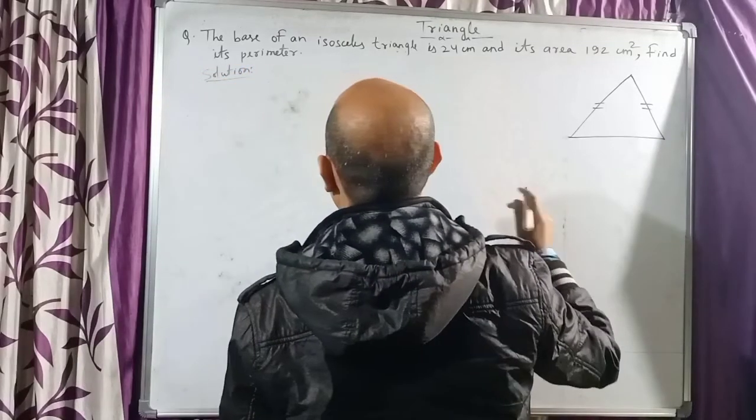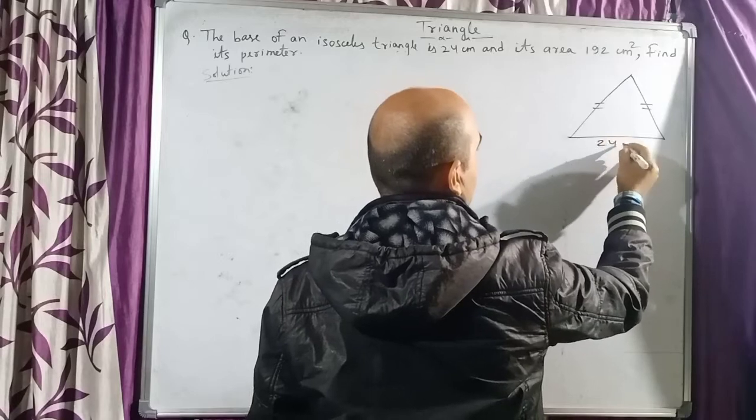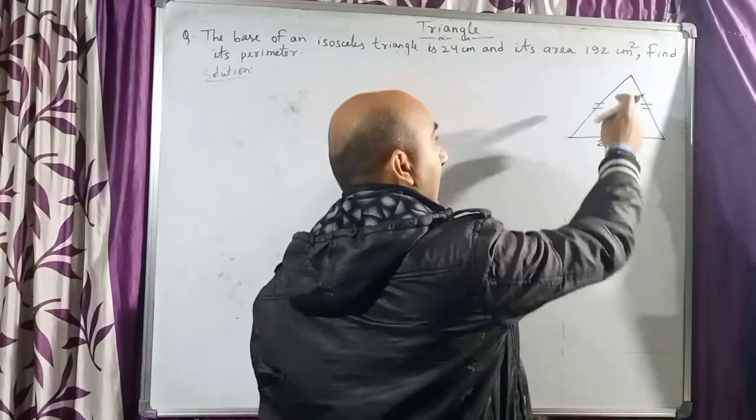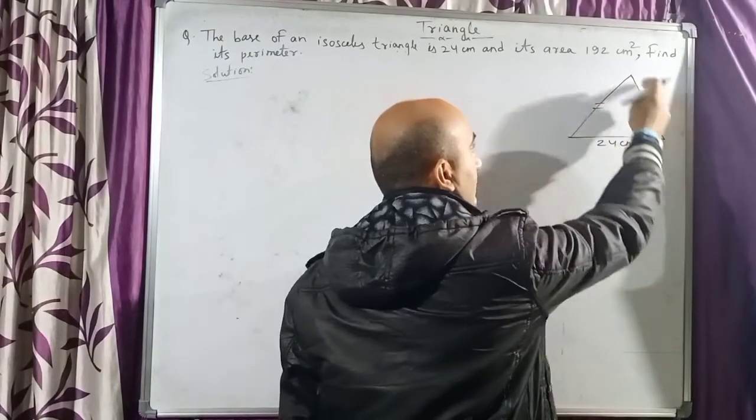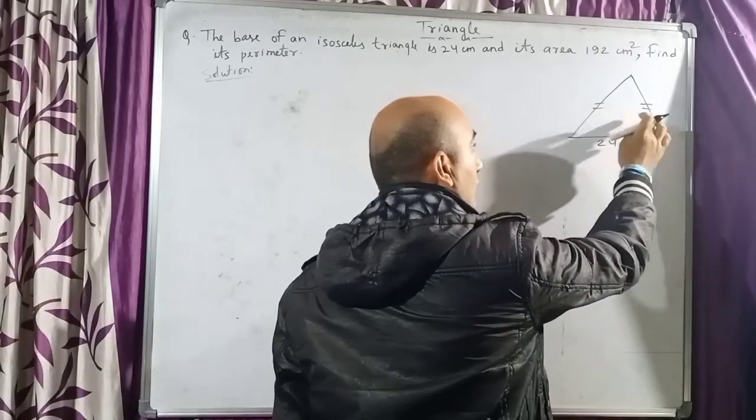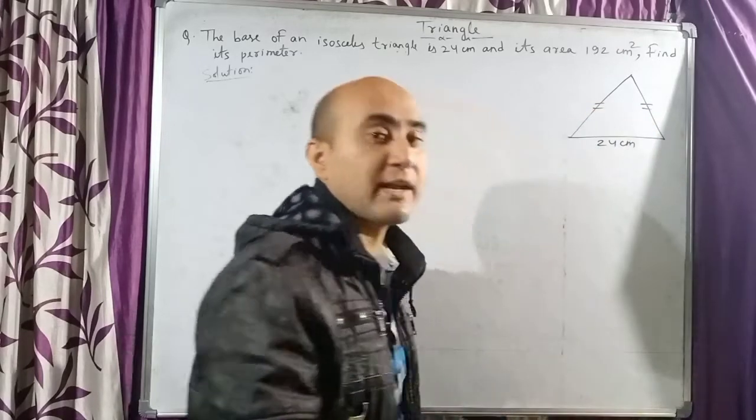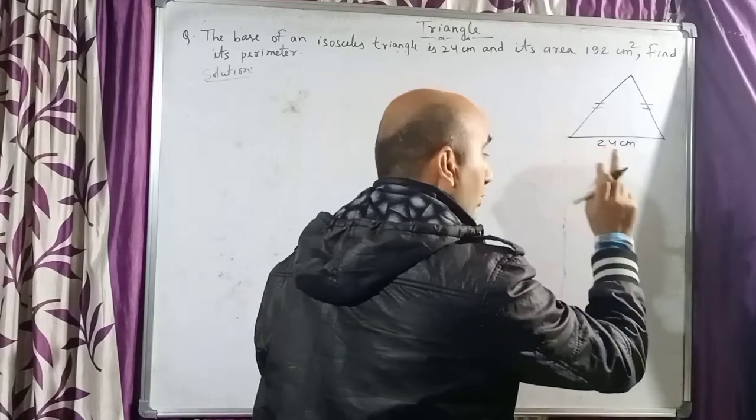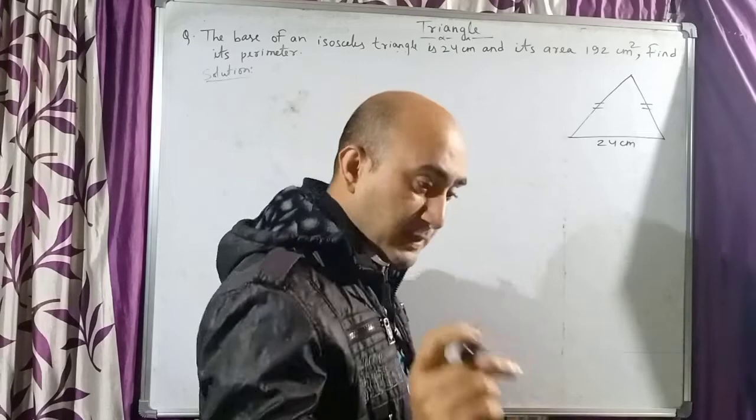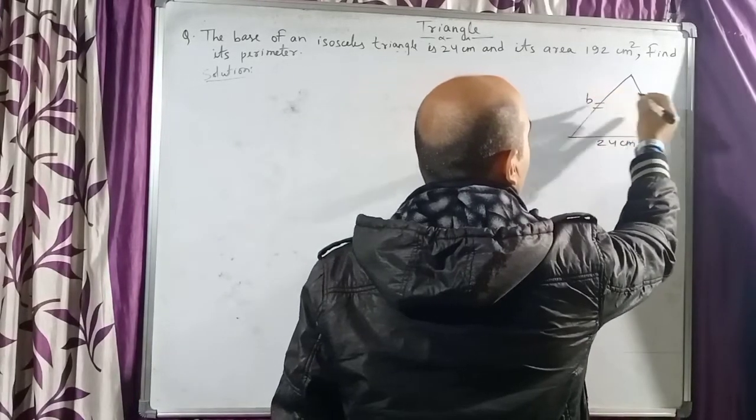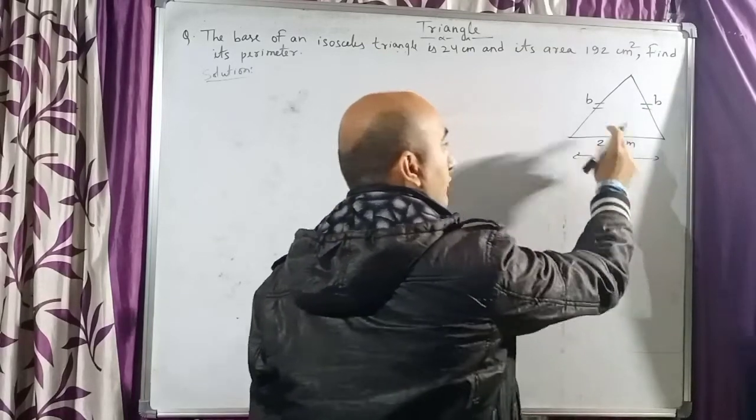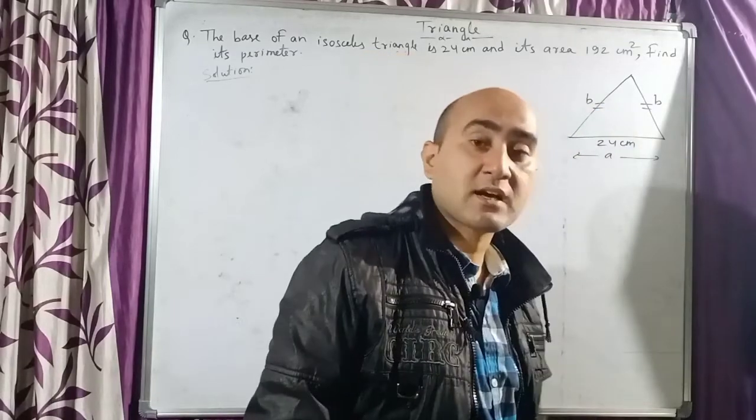The base of the isosceles triangle is given as 24 centimeters and we have to find the perimeter. Perimeter means adding all three sides of a triangle, but we only know one side. We should know these two sides as well. But the point to be noted is both the sides are equal. So as per my formula, the two equal sides are called b and the base is called a. That means the value of a is 24 but the value of b is unknown.